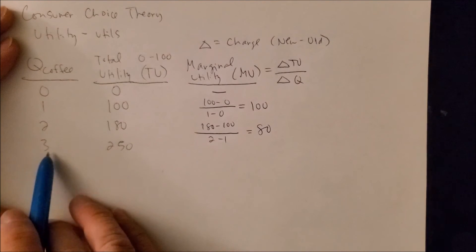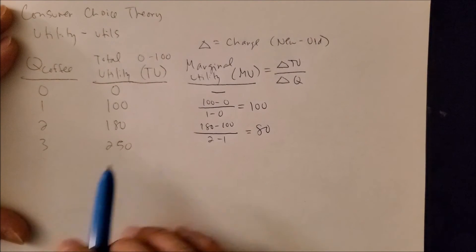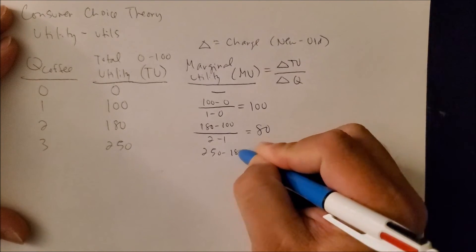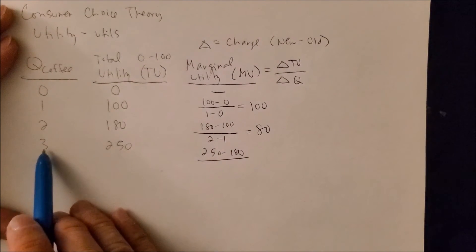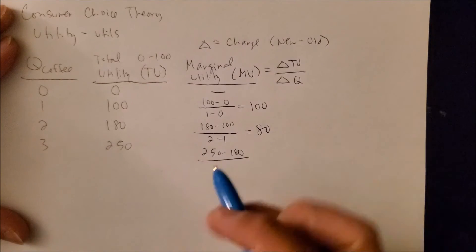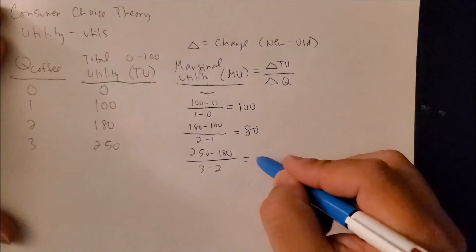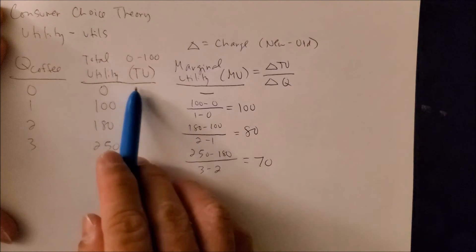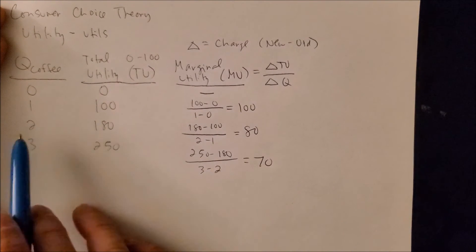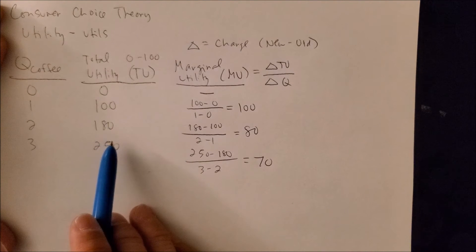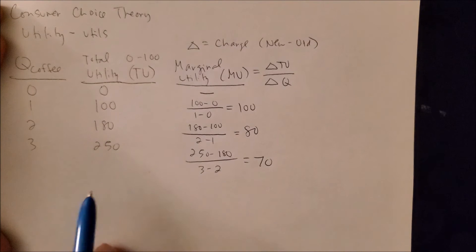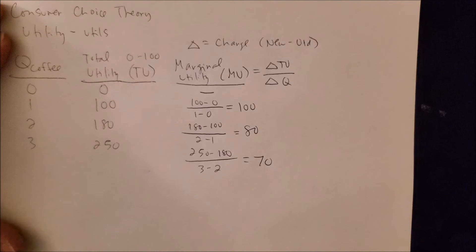And then last but not least, we have a change yet again, one more change from 2 to 3. So here we're going to have 250 minus 180 on the numerator over 3 minus 2, that's the change in quantity on the denominator, which gives us 70. Notice one thing: notice that when we focus on TU initially, if we were to graph these two and put Q on the x-axis and TU on the y-axis, all that we're going to see is an increasing slope. It's going to increase at 100, 180, 250, and that's not much information that's useful.